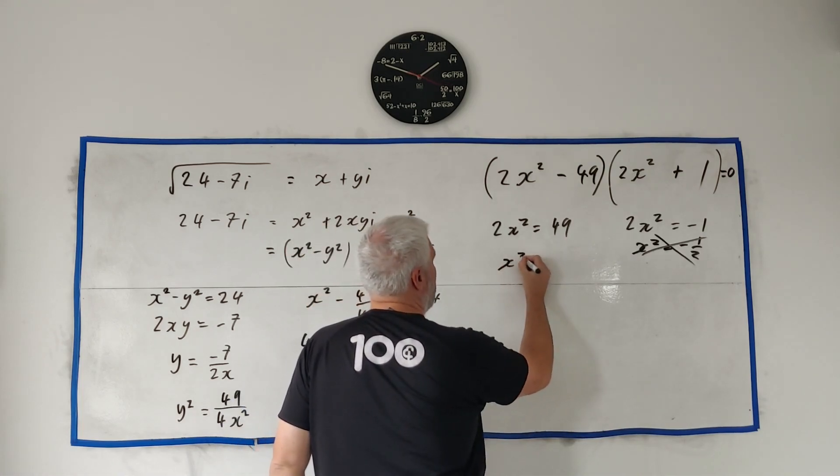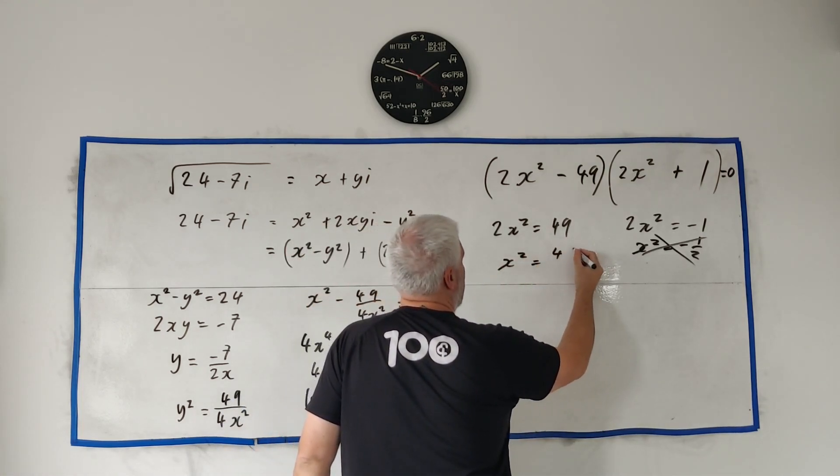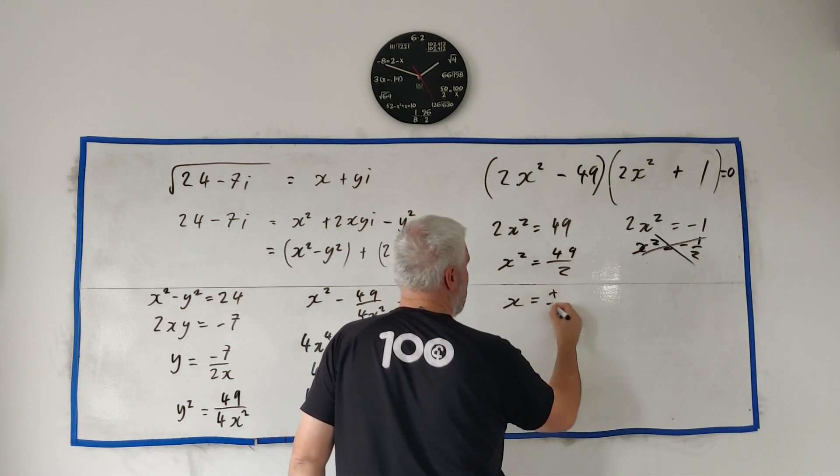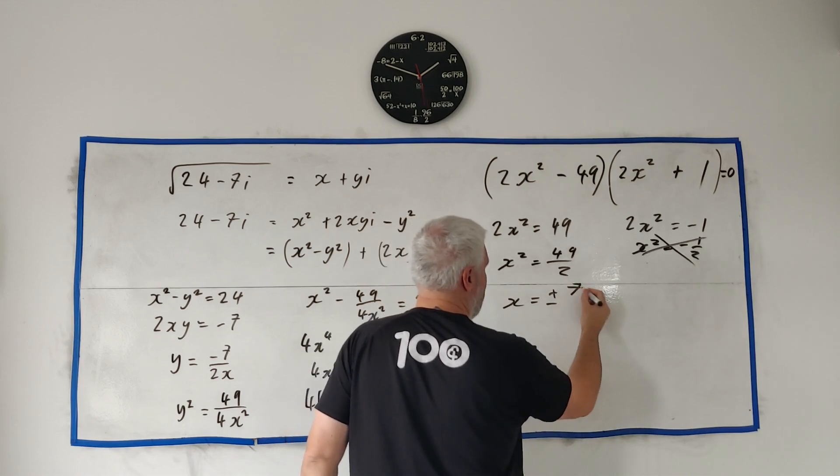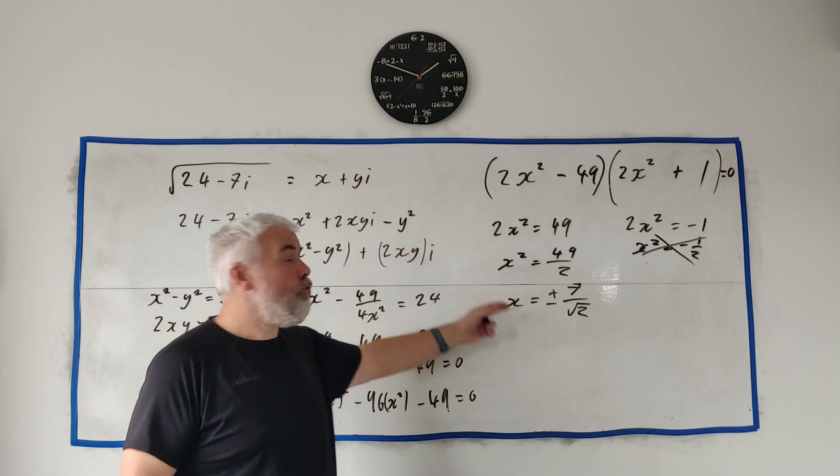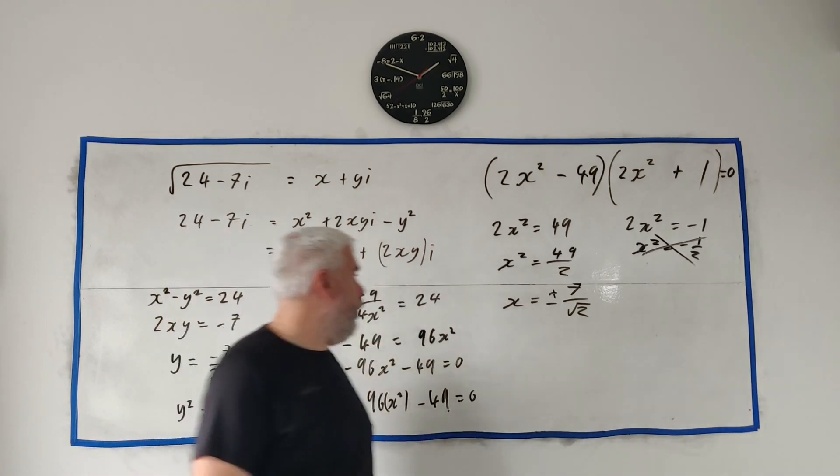So we're left with two answers here: x squared is equal to 49 over 2. x is equal to plus or minus square root of 49 is 7 over the square root of 2. But remember we don't just need x, we also need y.